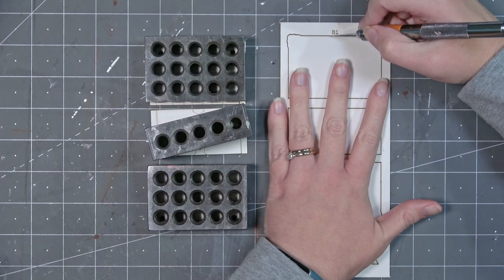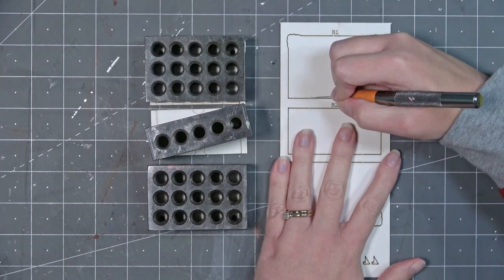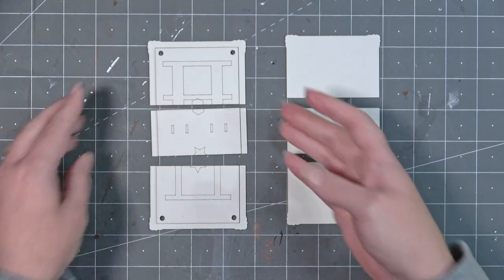While those are drying you can remove all of your pieces that are marked with the letter B. Continue to keep them lined up as we have been doing throughout this process.